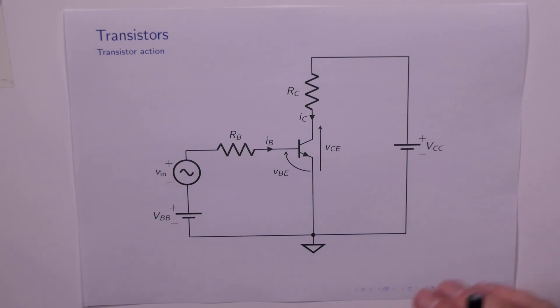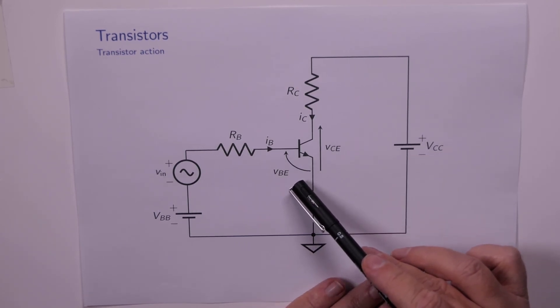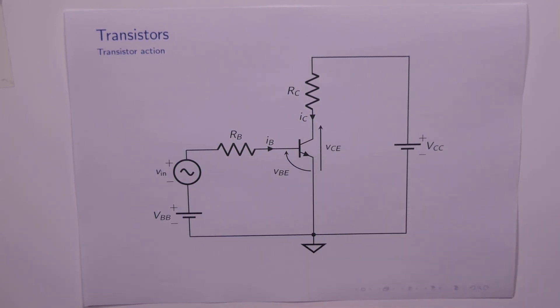In the last video we looked at the transistor terminal characteristics and we concerned ourselves with the base current versus VBE and the collector current versus VCE. Before we go into more technical detail, let's have a look at what we call transistor action.